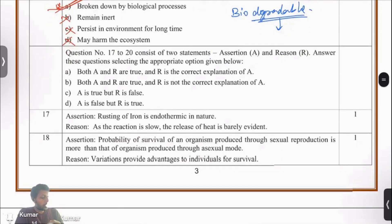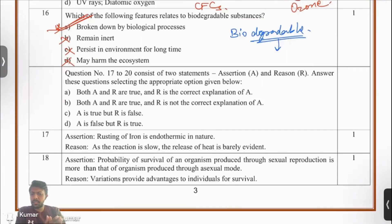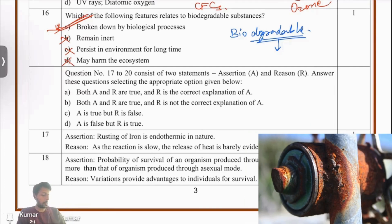Question number 17 to 20, we have assertion reason questions. There is a very simple strategy to solve assertion reason questions. I will quickly explain the format. You have a statement given to you and you have a reason explaining that statement. If both the statements and the reasons are correct and the reason correctly explains the statement made, then you choose option A.